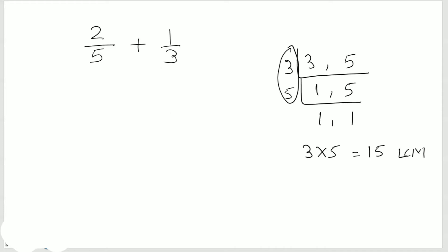Now, what we are going to do is we are going to make the denominator 15. For that, we will multiply the first fraction by 3, because 5 times 3 is 15. So since we are multiplying by 3 in the denominator, we need to do that in the numerator as well.